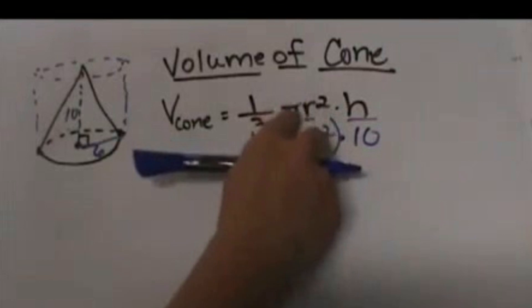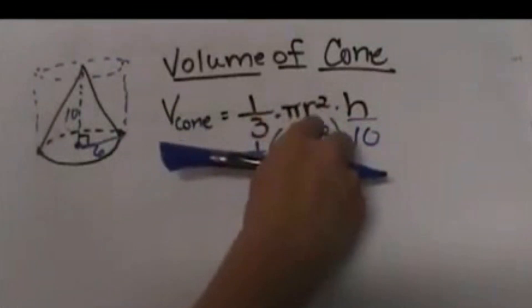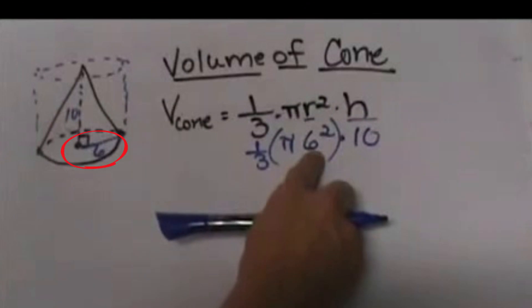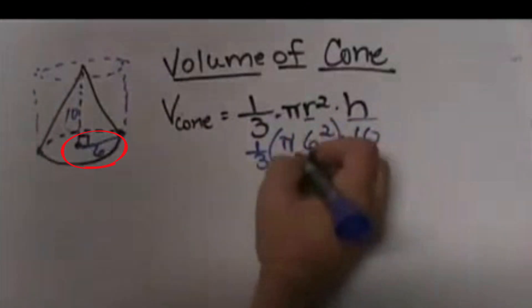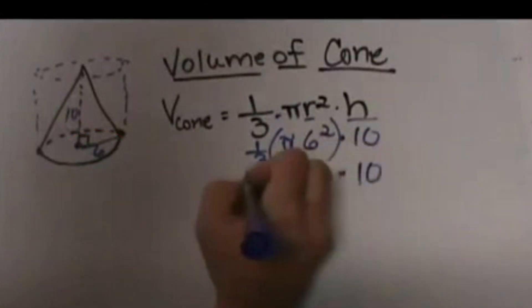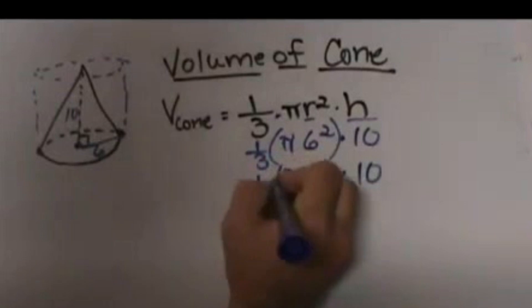So let's simplify our area of the base, which is π r². It is the circular base. So 6 squared is 36 times pi is just 36π, and then times 10. I'll bring it down times 1/3.